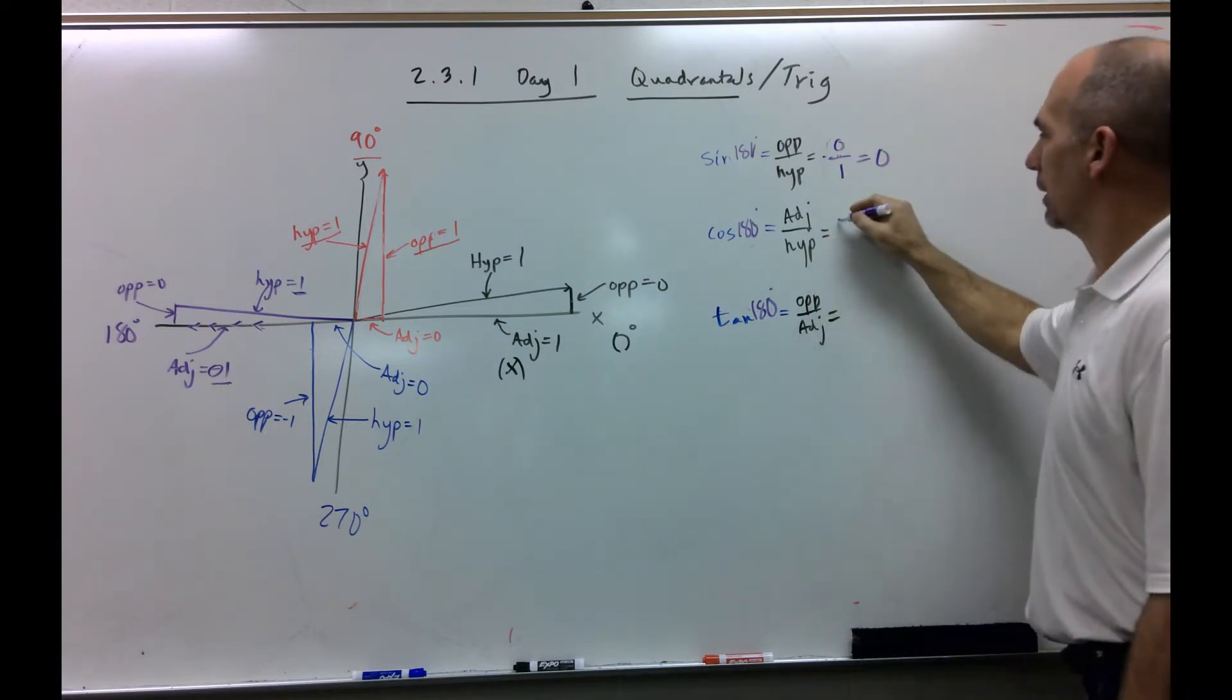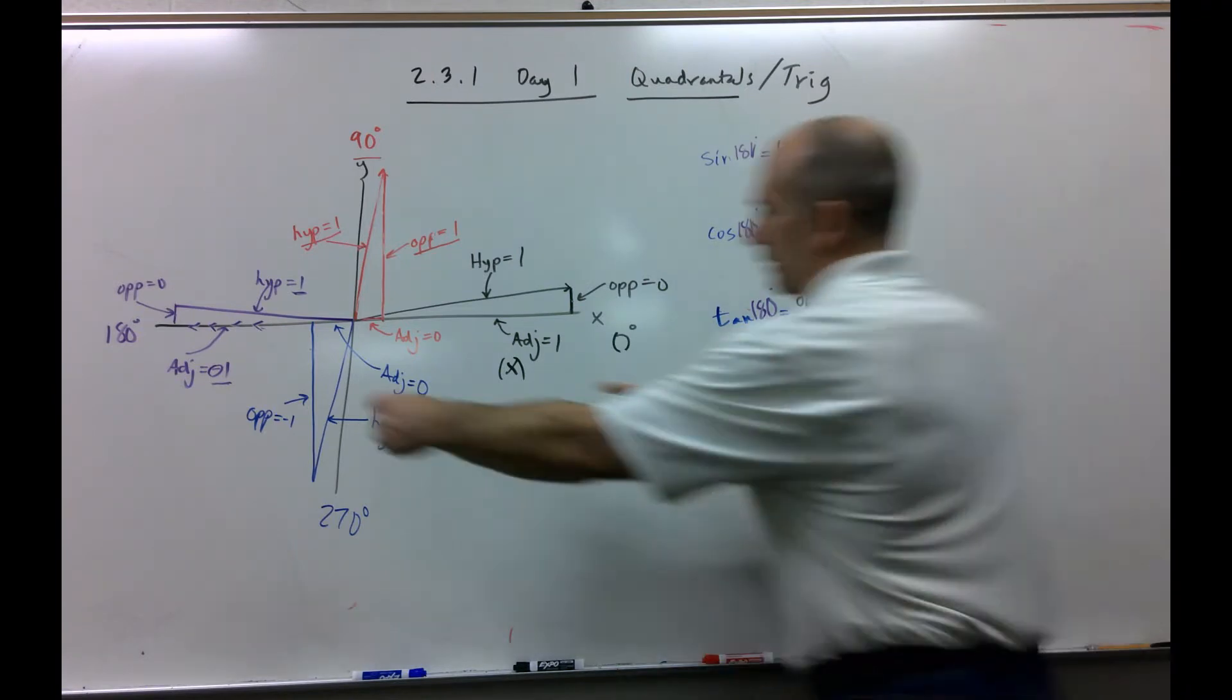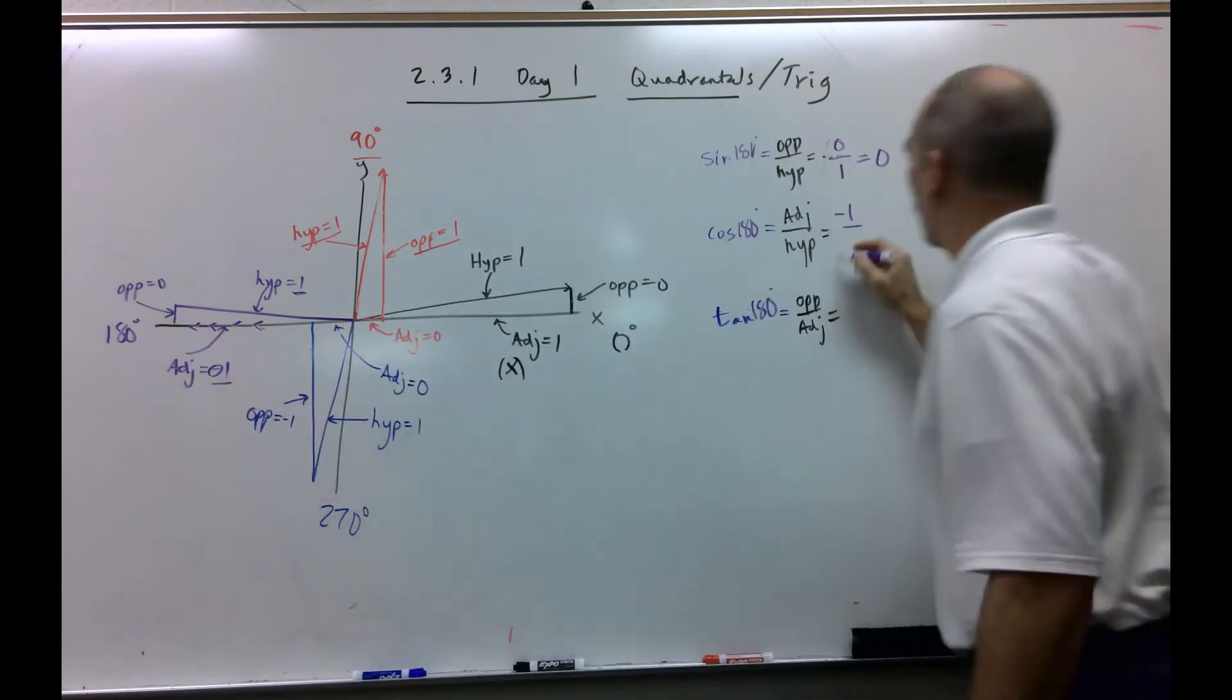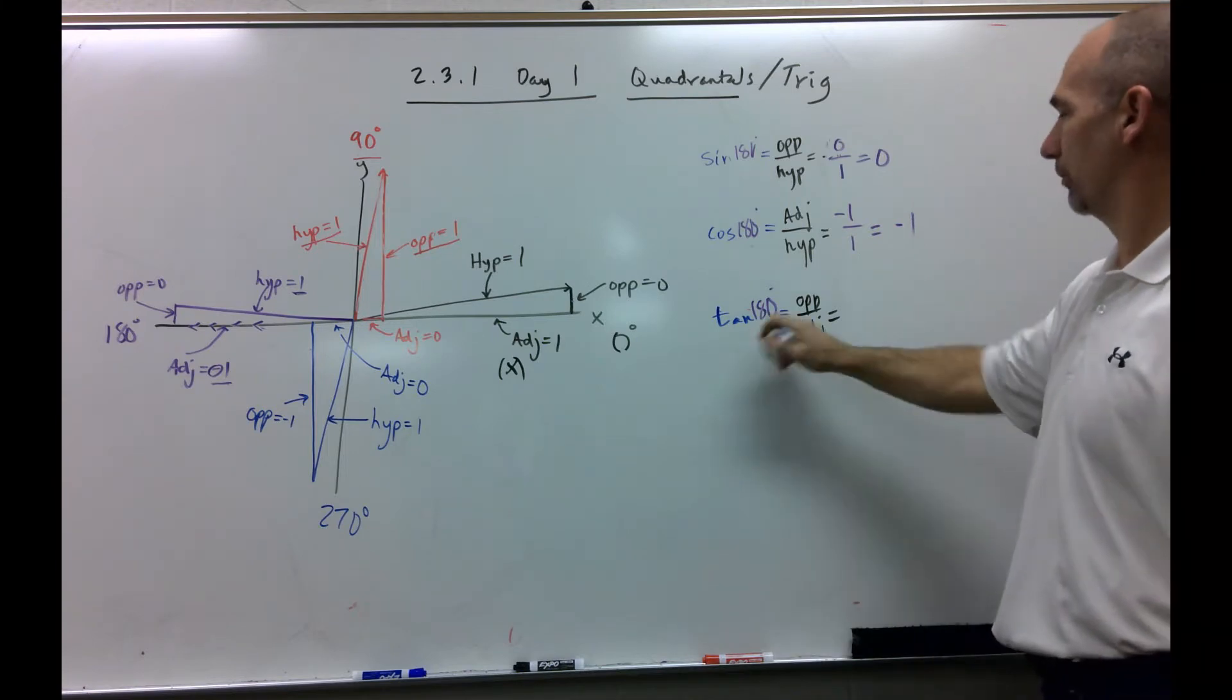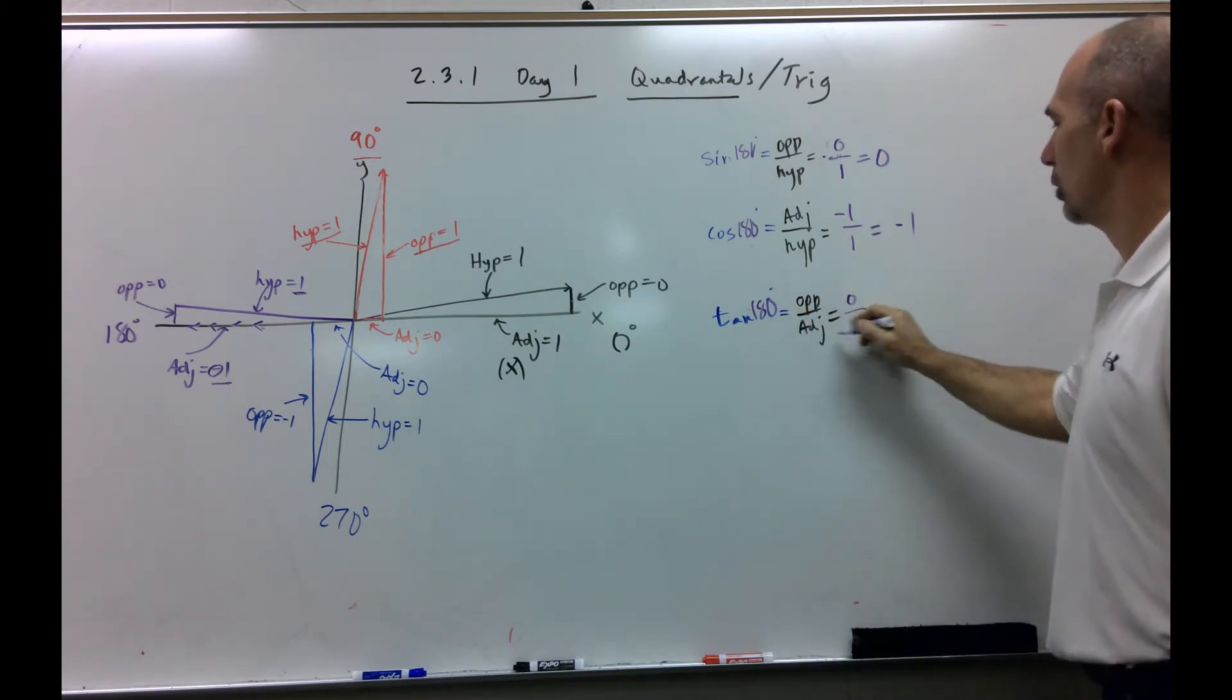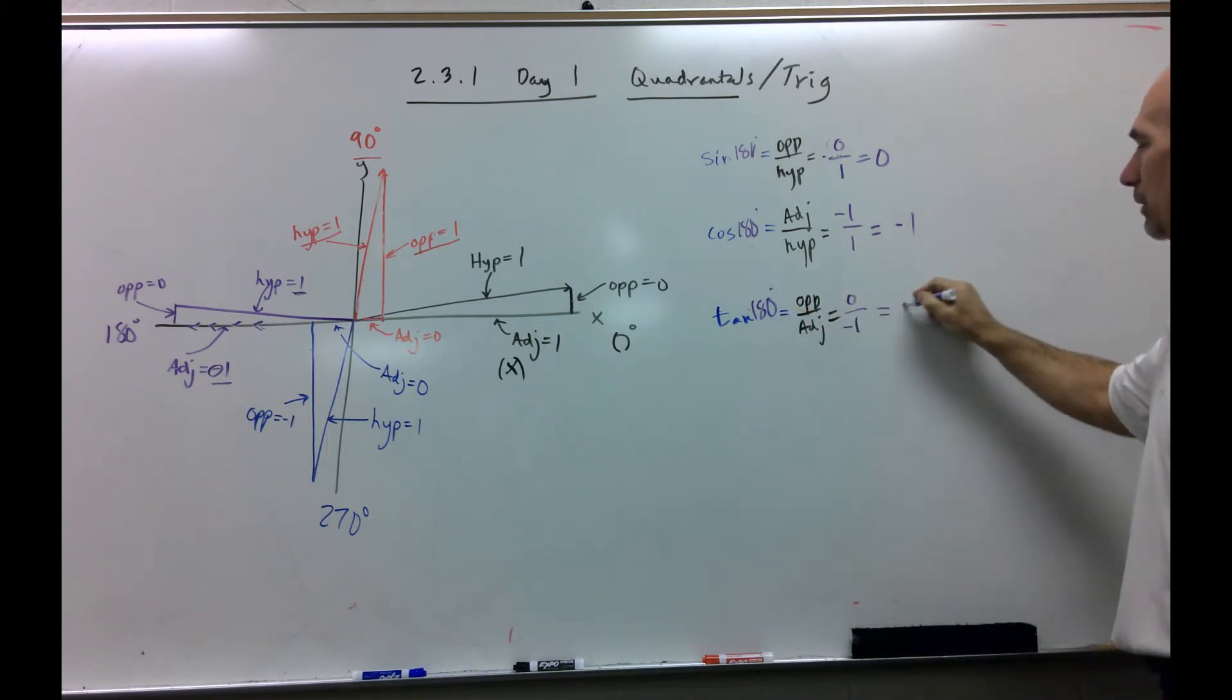So, at 180 degrees, opposite over hypotenuse would be 0 over 1, which is 0. Cosine. Negative 1, because that's what this is, over 1 is negative 1. Again, test it out in your calculator. Tangent. Opposite, which is 0, over adjacent, negative 1, 0.